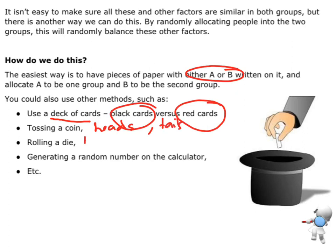Rolling a dice, if you've got a one, two or a three, you're in one group versus getting a four, five or six, you're in the other group. So there's lots of different ways that we could randomly allocate.